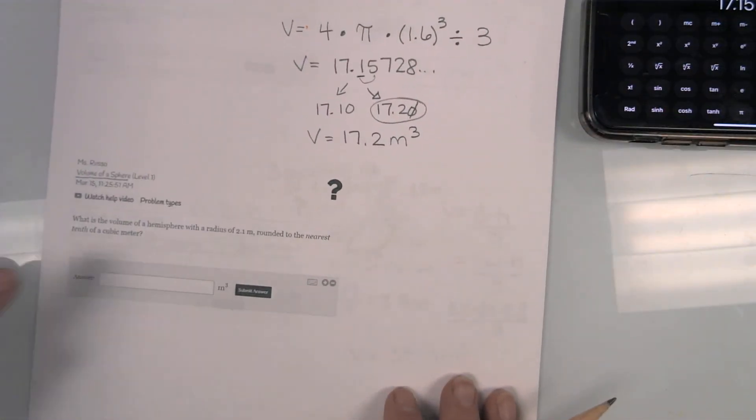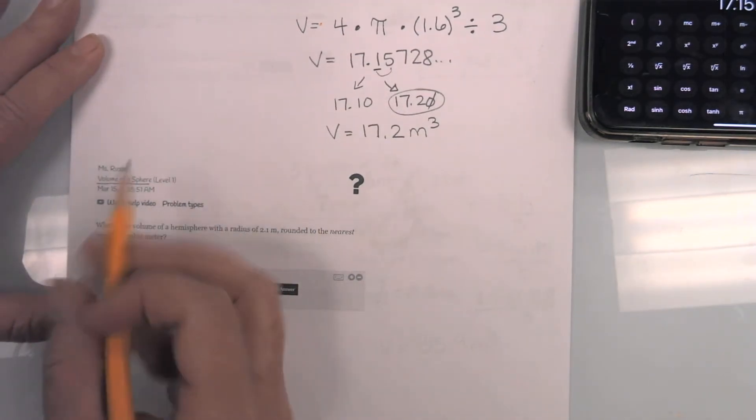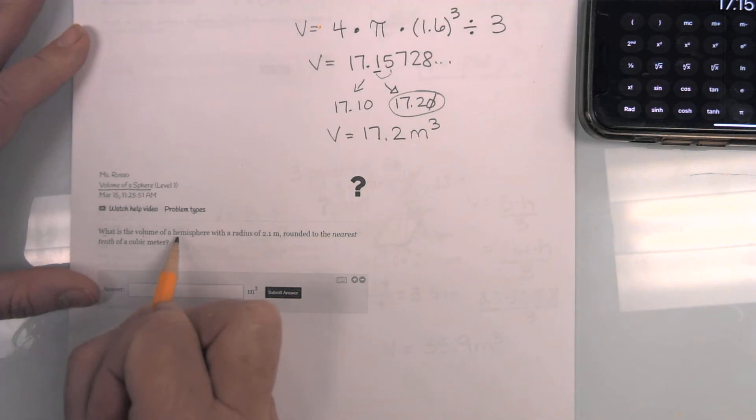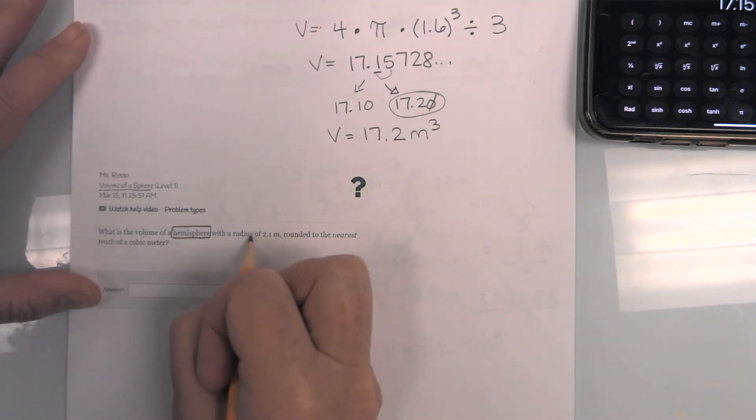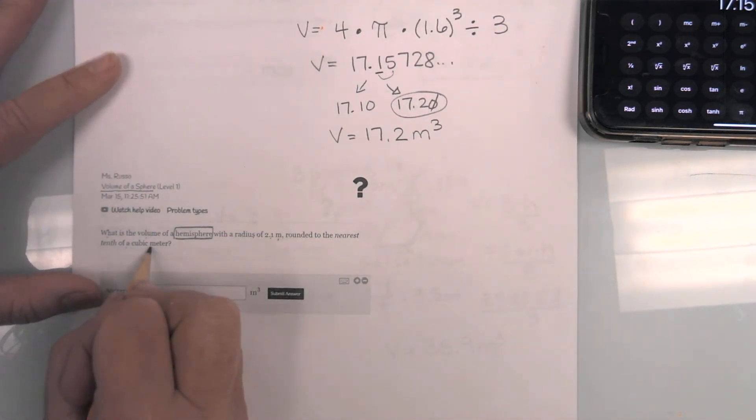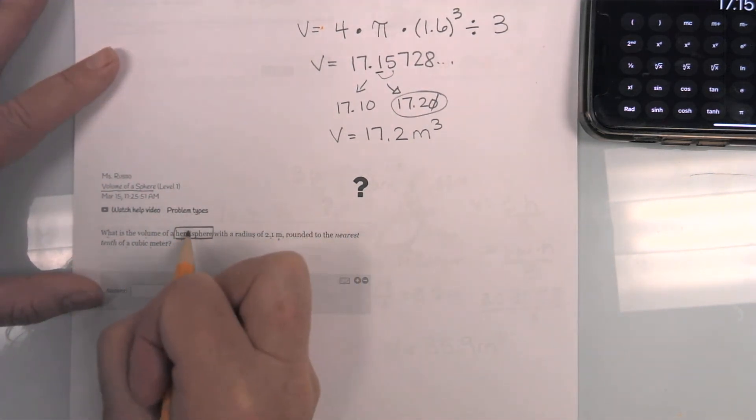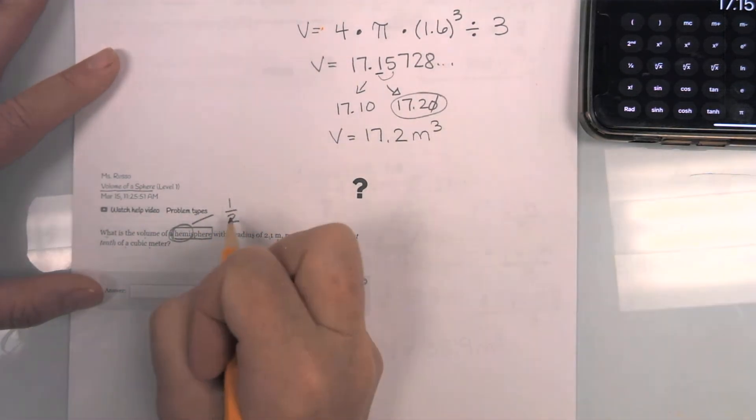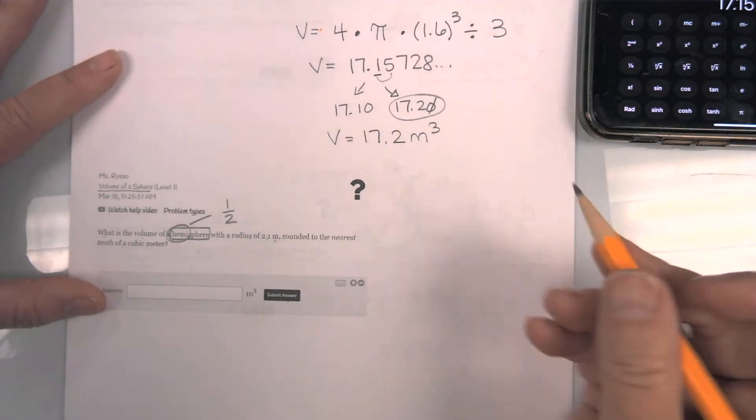Next one. The second one is also spheres, but they have a new vocabulary word that I want to make sure that you understand. What is the volume of a hemisphere with a radius of 2.1 meters rounded to the nearest tenth of a cubic meter? Okay, hemi, hemi means half.